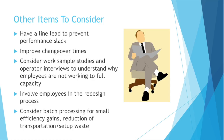I'll end on a few other items to consider. You can have a line lead — someone who controls the operators on the line — to prevent performance slack. You'll designate someone who's been there the longest or has the best skill, promote them to line lead, pay them a little more, and give them authority over the others. This will help prevent slack.